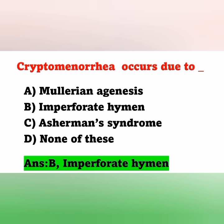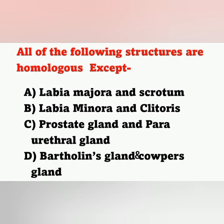The next question: All of the following structures are homologous except. Option A: Labia Majora and Scrotum. Option B: Labia Minora and Clitoris. Option C: Prostate Gland and Paraurethral Gland. Option D: Bartholin's Gland and Cowper's Gland. The question is, among the following options, which is not a homologous organ?